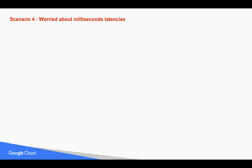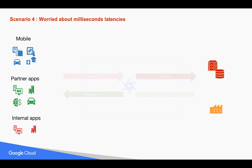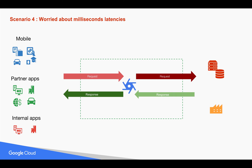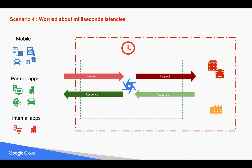The fourth scenario is that you are worried about latencies. Whenever you expose your backend services through an API management platform, you are worried about latencies because of network hops, and you want the entire runtime within your own premises. In that case you can consider Apigee Edge Micro Gateway, which sits inside your firewalls closer to your workloads.